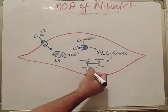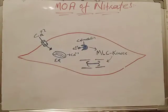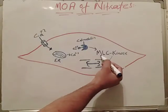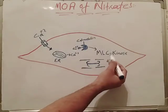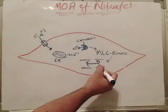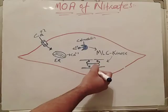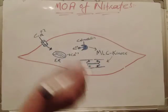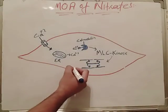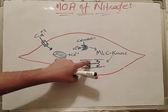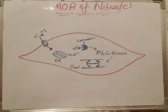In smooth muscle, there is no troponin and no tropomyosin, so the core processes play a key role in contraction. Myosin light chain kinase phosphorylates the light chain head of myosin, upon which actin filaments act, causing smooth muscle contraction. After contraction, phosphatase enzymes dephosphorylate the myosin head and relaxation occurs. This is the normal working of smooth muscle.